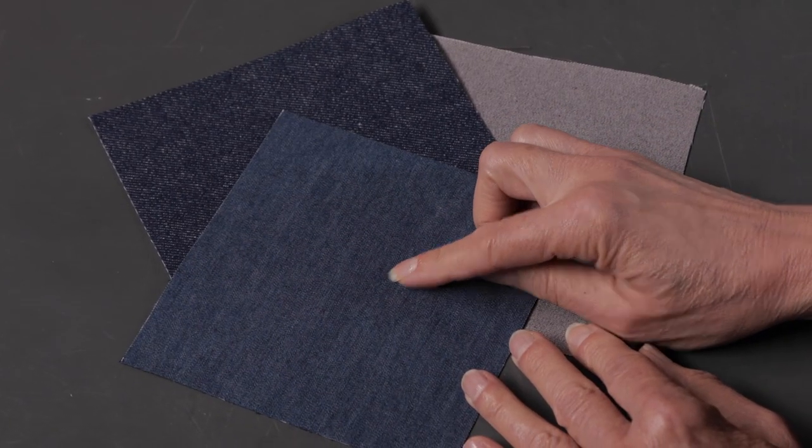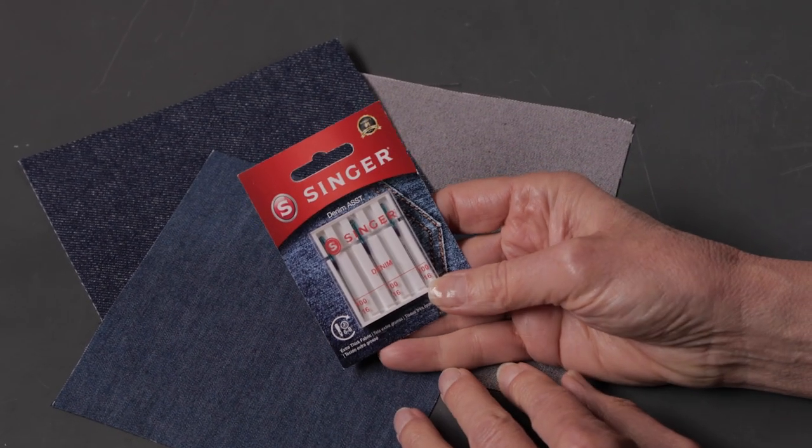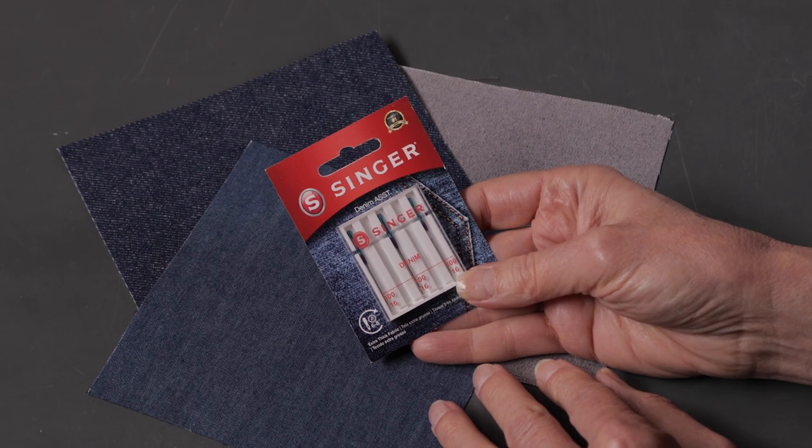For fabrics like chambray, denim, and canvas you can use denim needles. They're also available in single size or multi-pack and they're indicated by this bright blue color at the top of the needle.